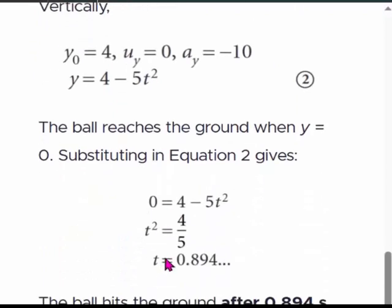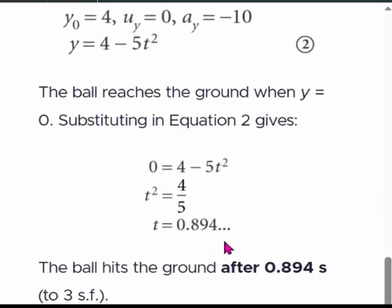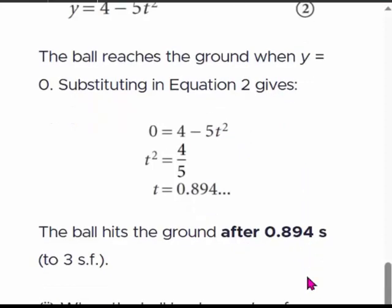The ball reaches the ground when y = 0. We substitute y = 0 into equation 2: 0 = 4 − 5t². Taking t² to one side and taking the square root, to three significant figures, the value of t is 0.894 seconds. The ball hits the ground after traveling 0.894 seconds. That is our first answer.